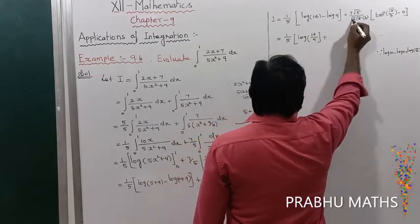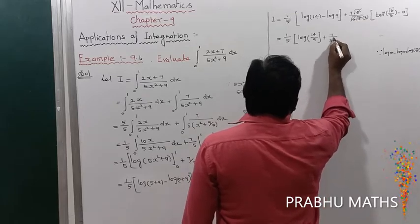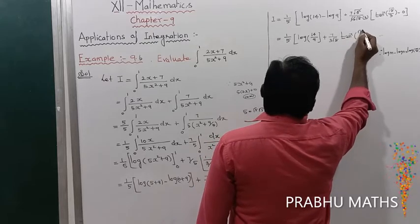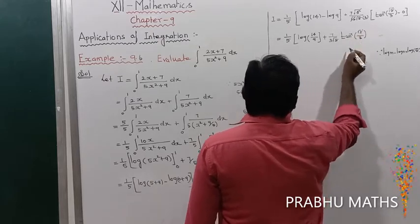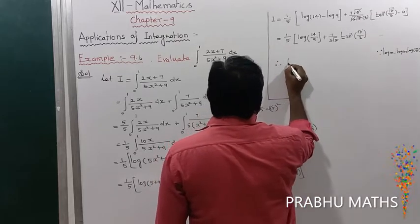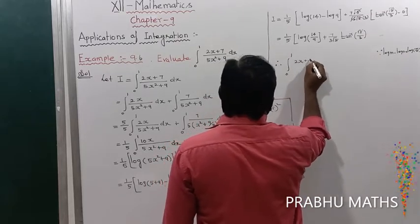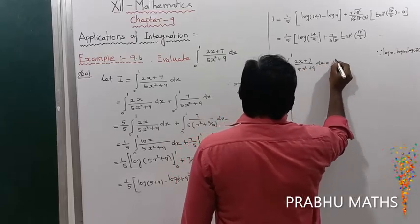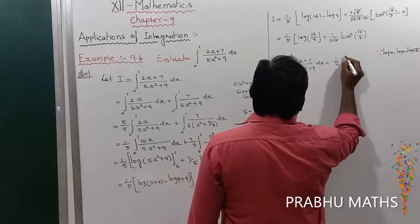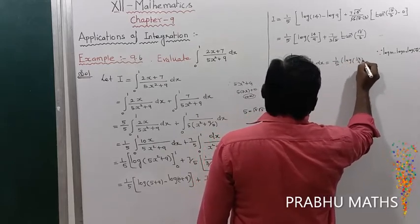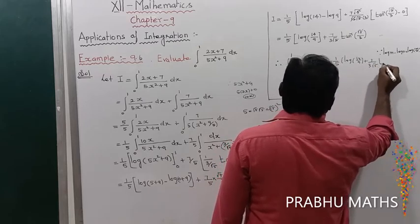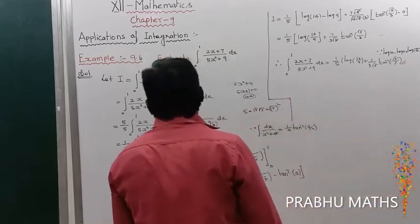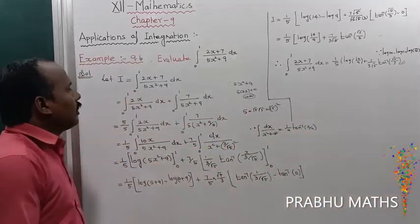Therefore ∫₀¹ (2x + 7)/(5x² + 9) dx = (1/5)·log(14/9) + (7/(3√5))·tan⁻¹(√5/3). This is the solution to Example 9.6.